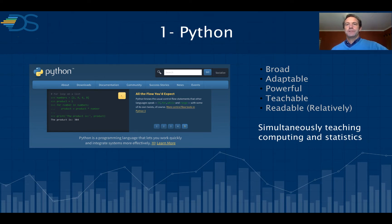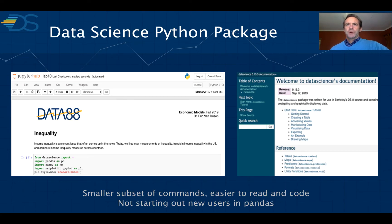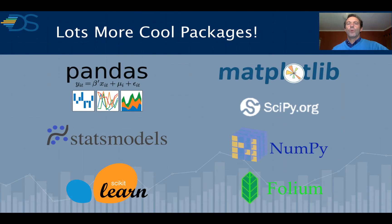On the first element, Python: we have lots of discussions whether to teach Python or R for data science. We think Python is a great place to learn both computing and statistics at the same time. It's a broad language with so many different tools available, relatively easy to teach and relatively easy to read. For teaching at UC Berkeley, the instructors of Data 8 built a special package called the Data Science Python package — a smaller subset of commands that's easier for students to master instead of starting with pandas the first time. Once students are in Jupyter Notebooks, they can use all possible packages in the scientific computing ecosystem: pandas, stats models, scikit-learn for machine learning, open-source mapping with folium, and all sorts of graphical and visualization products.